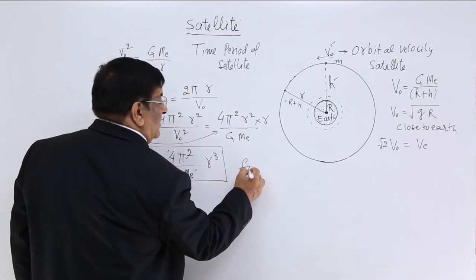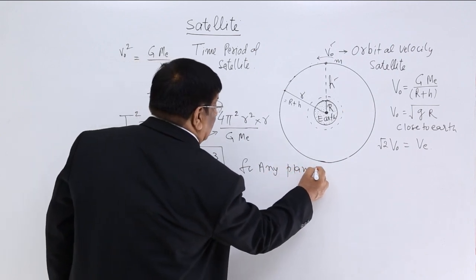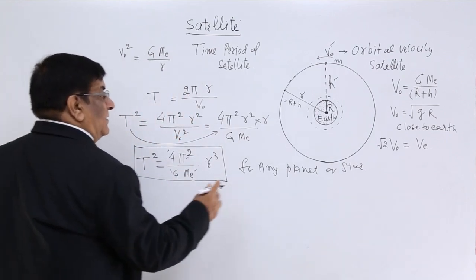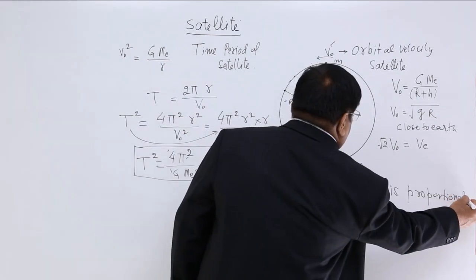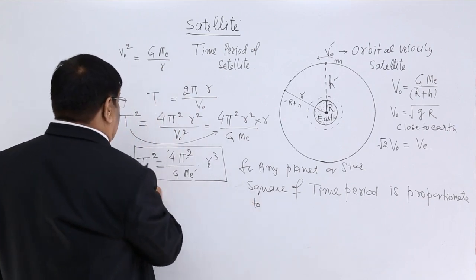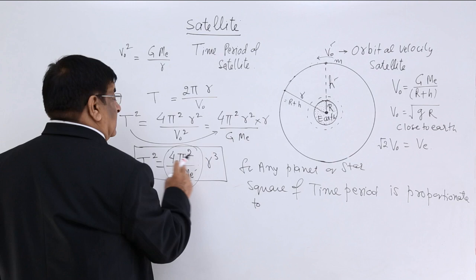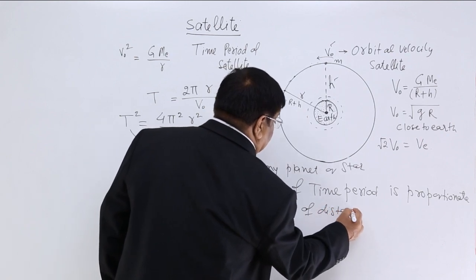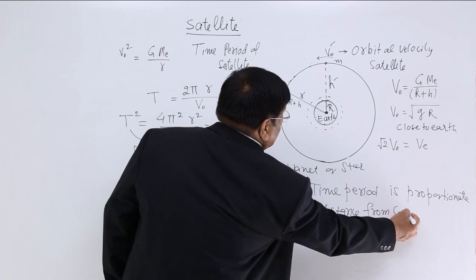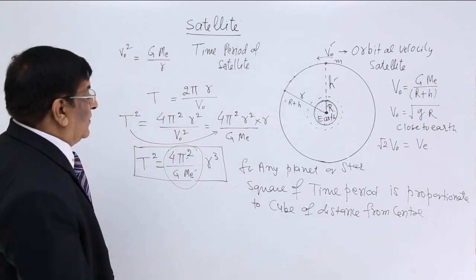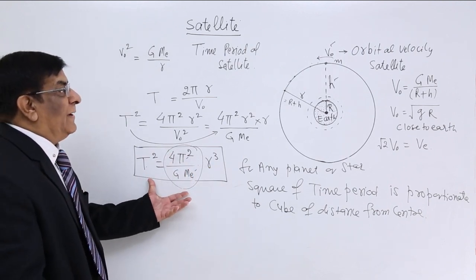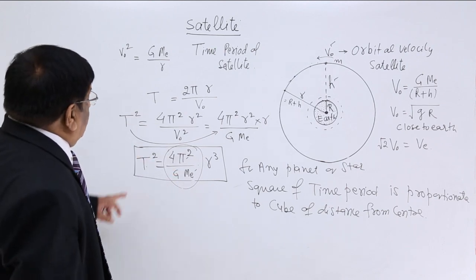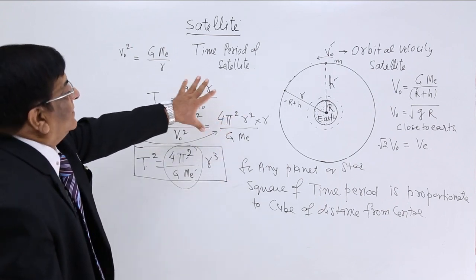So for any planet or star, square of time period is proportionate to, so square of time period is, this is constant, so this is proportionate to cube of distance from center. Cube of distance from center. And if you remember, this is what was third law, you have done it. So t square is proportionate to r cube, this comes in the time period.